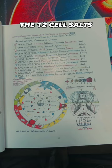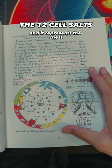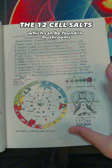June 21st to July 21st belongs to Cancer and it represents the chest and correlates to the adolescent stage and its cell salt is calcium fluoride, which can be found in mushrooms.